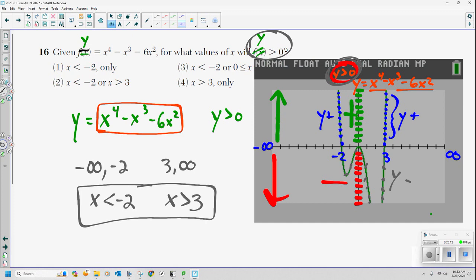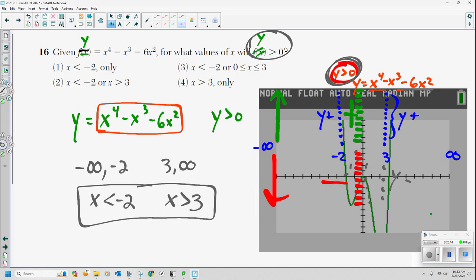So from negative 2, from negative infinity to negative 2, or any time x is less than negative 2, and from 3 to positive infinity, or any time x is greater than 3. These are the two points where my graph is above the x-axis, which means these are the two intervals where my y's will be positive. So let's take a look. Oh, choice 2. Any time I'm less than negative 2 or greater than 3. There you go. Now you could have done that algebraically. Go nuts. But why? Just look on your graph. Kids, we're done. I will see you for problems 17 through 24. Peace.